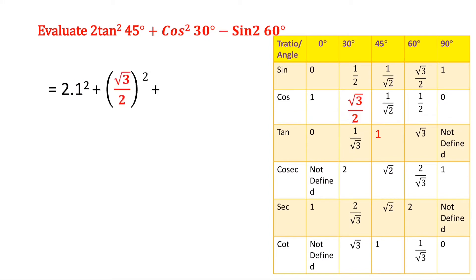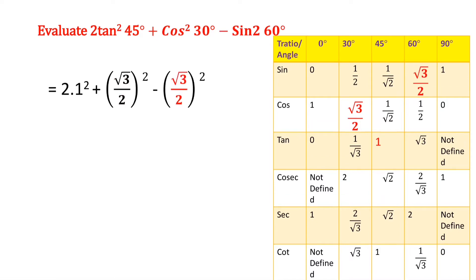Sin 60 degrees is also root 3 by 2, so sin squared 60 is root 3 by 2 whole square. Since cos squared 30 degrees and sin squared 60 degrees are the same value but with different signs (plus and minus), these two terms cancel each other out.